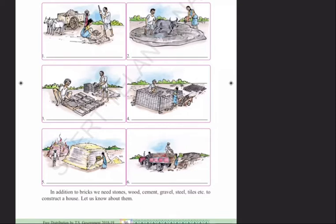For bringing materials like cement bricks, we require a lorry. For bringing sand, we require a tractor. For bringing steel rods, we require a lorry or a tractor. For bringing plywood sheets, we mostly need an auto. For bringing cement bricks, we need a lorry to carry the material.